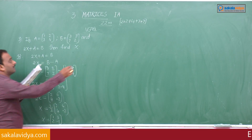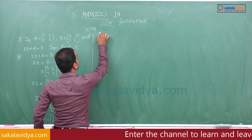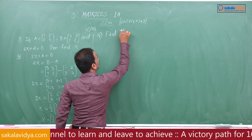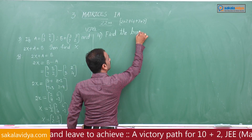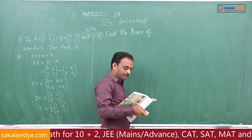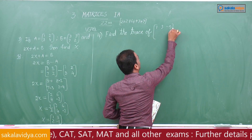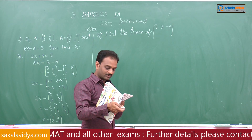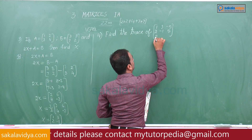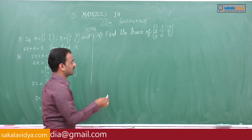Problem number 4: Find the trace of the matrix [1, 3, -5; 2, -1, 5; 2, 0, 1].